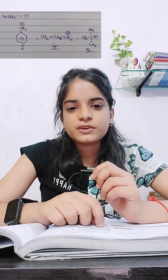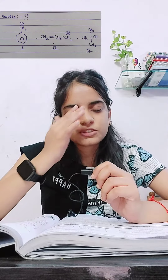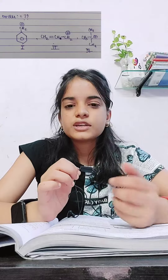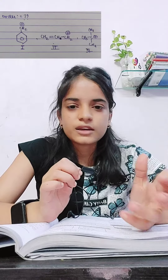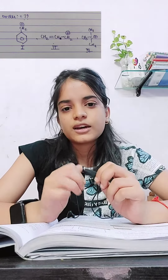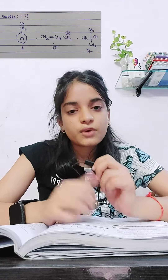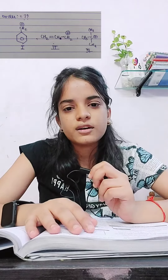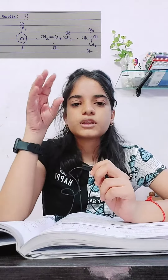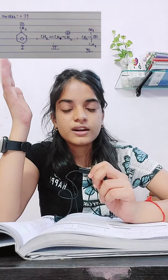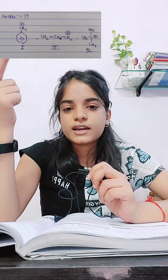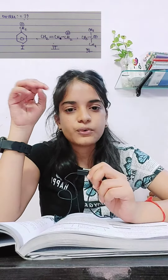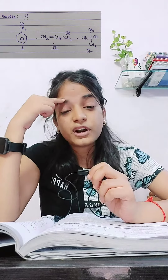Hello everyone, welcome to this video. Sorry for disturbing you so late — actually 2 hours ago I had a doubt in the community. The question was about the stability order of carbocations: tertiary carbocation, benzylic carbocation, and allylic carbocation.